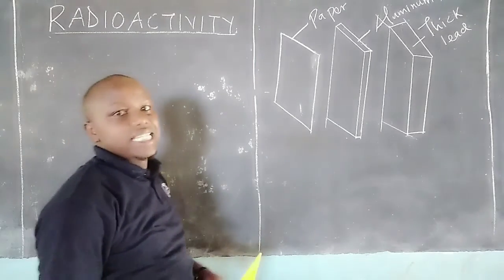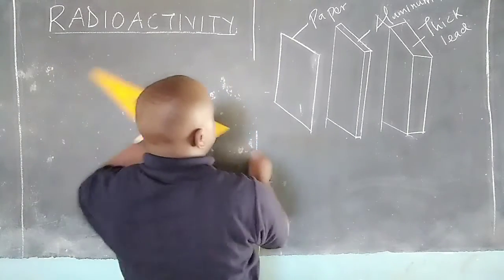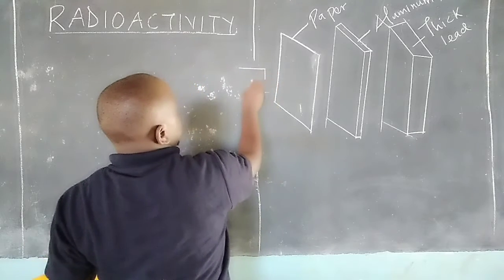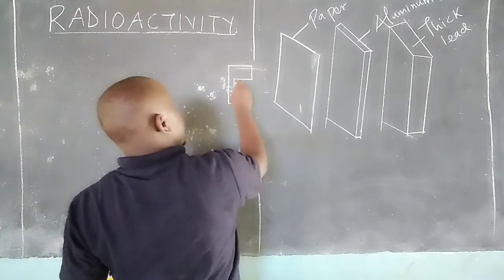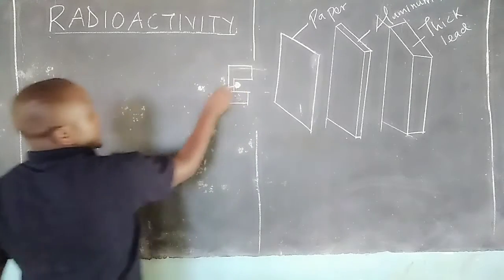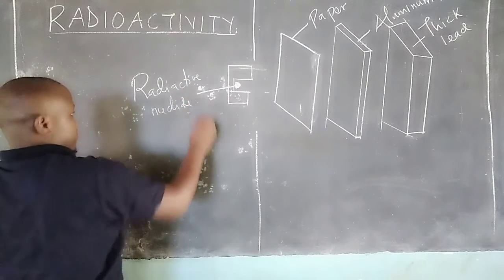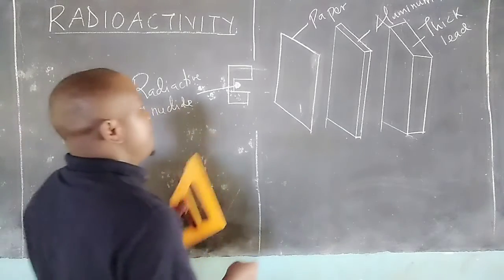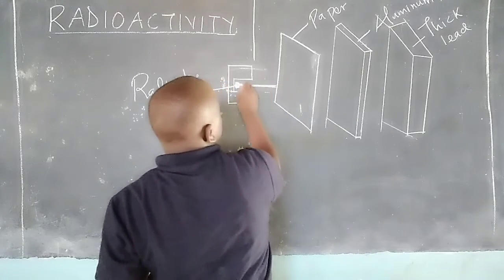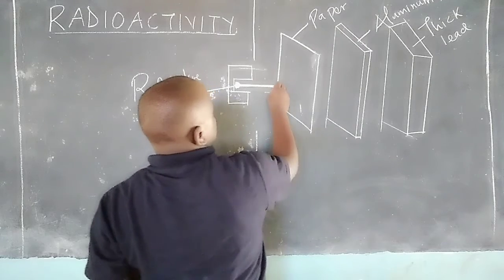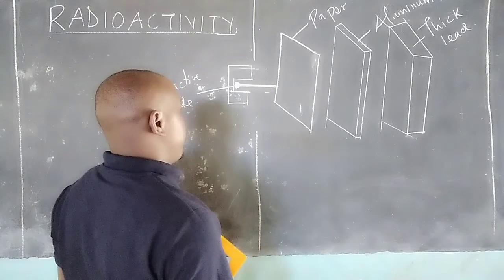When a radioactive substance is placed in front of these materials, we say from the radioactive source, the radioactive nuclide can be placed here. We will have the radiations coming out. They are not facing any deflection because there is no magnetic or electric field.